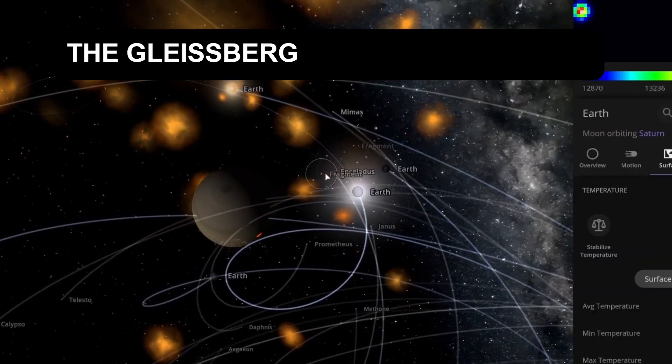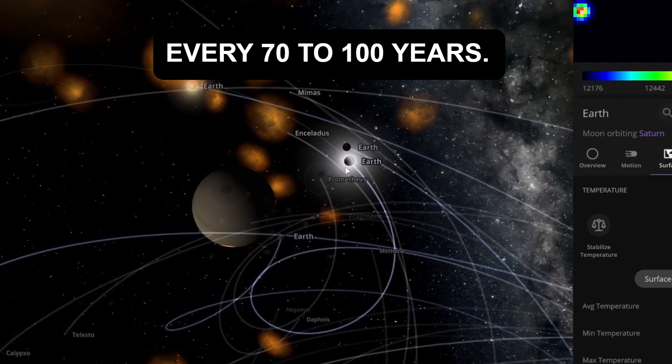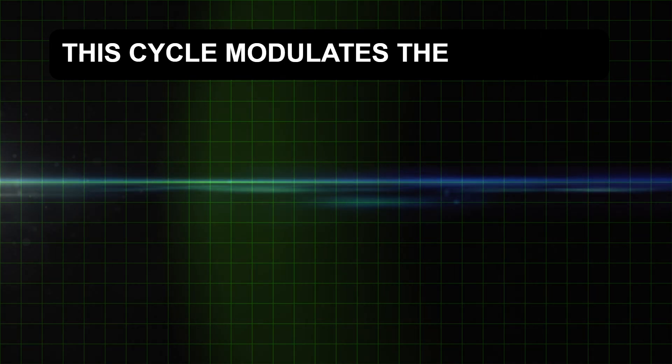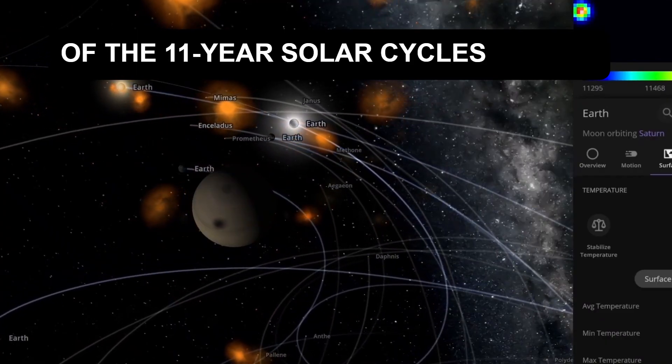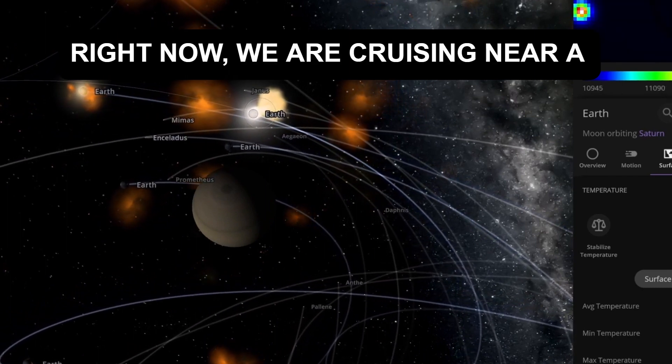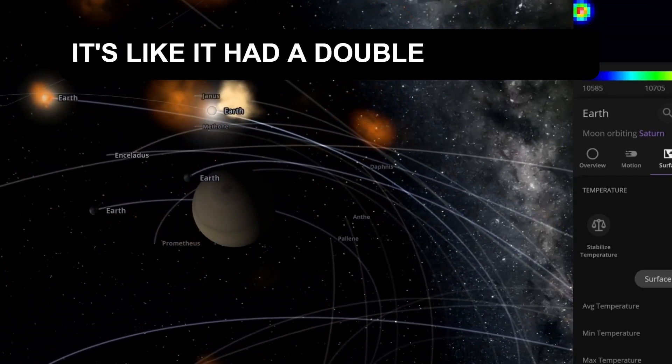Then we have the Gleesburg cycle. The Gleesburg cycle lasts about every 70 to 100 years. Picture the sun with a slow heartbeat. This cycle modulates the intensity of the 11-year solar cycles over a longer period. Right now, we are cruising near a peak, meaning that the sun is in an energetic phase. It's like it had a double espresso.